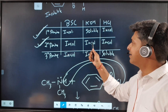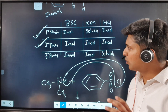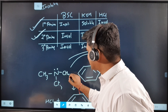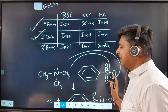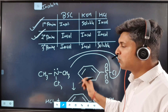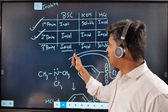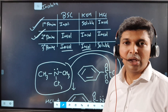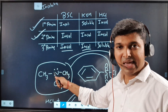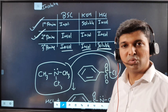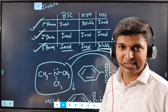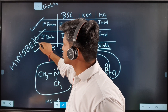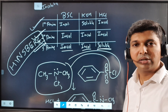A tertiary amine has no N–H hydrogen at all, so it cannot react with benzene sulfonyl chloride — it remains insoluble after BSC addition, and also insoluble after KOH. But when HCl is added, the lone pair on nitrogen reacts with HCl to form a soluble salt, giving a clear solution. This is the Hinsberg test, used to identify primary, secondary, and tertiary amines.